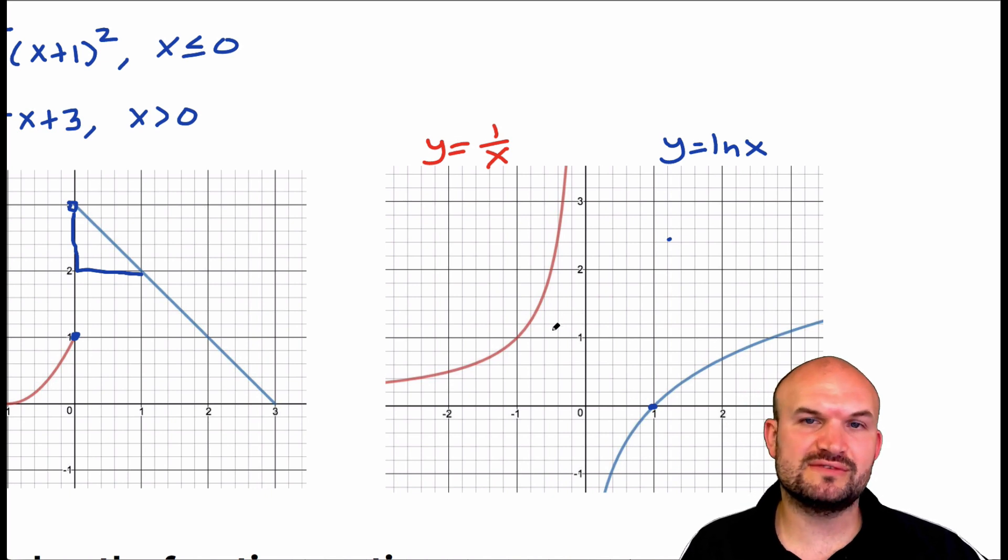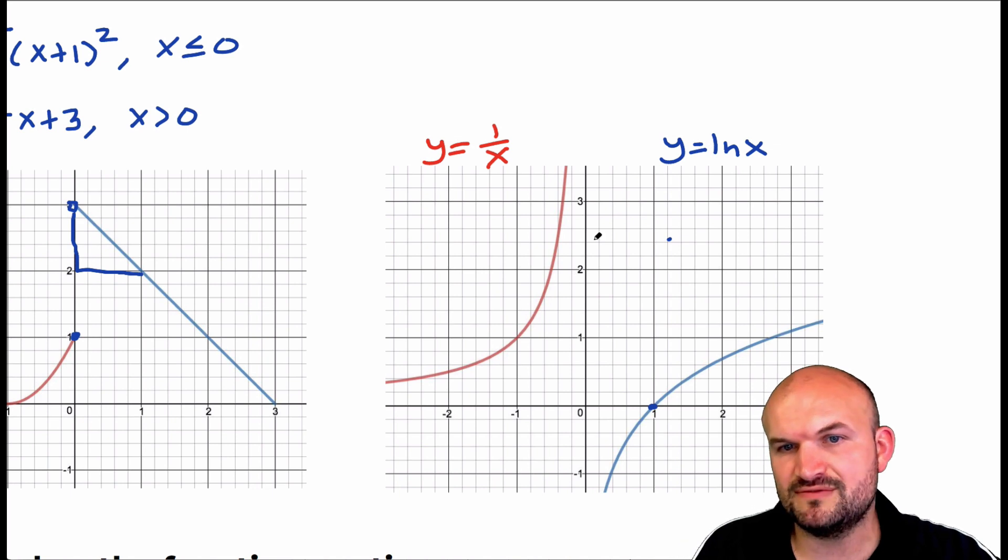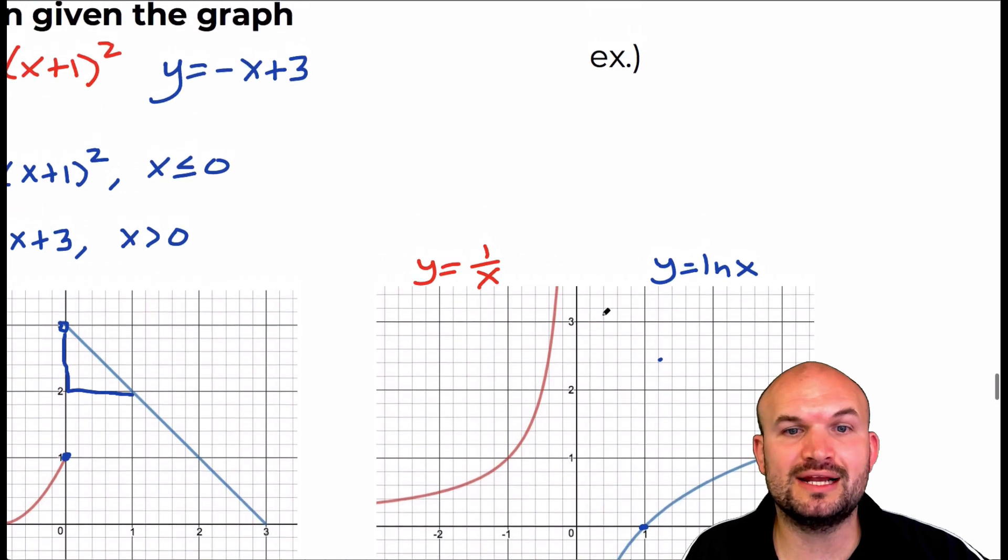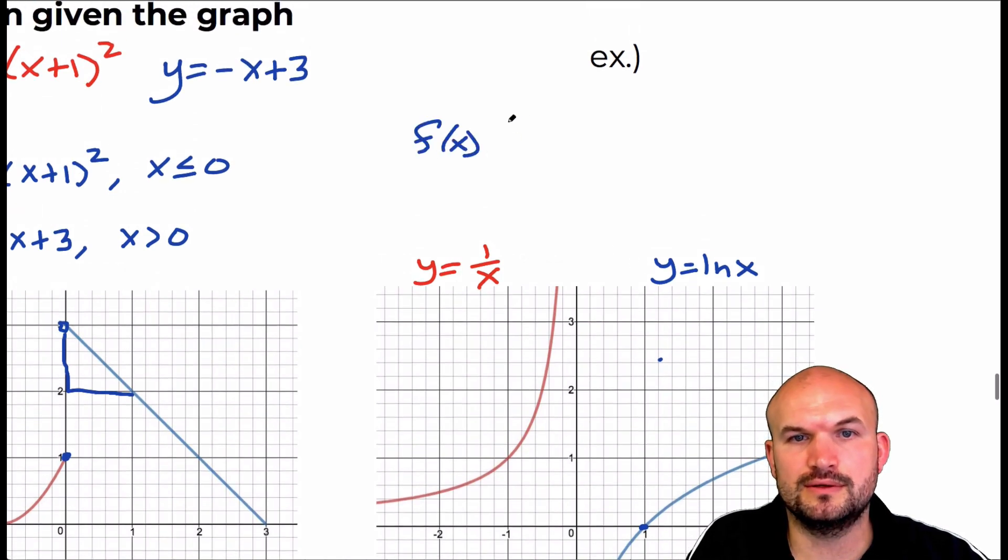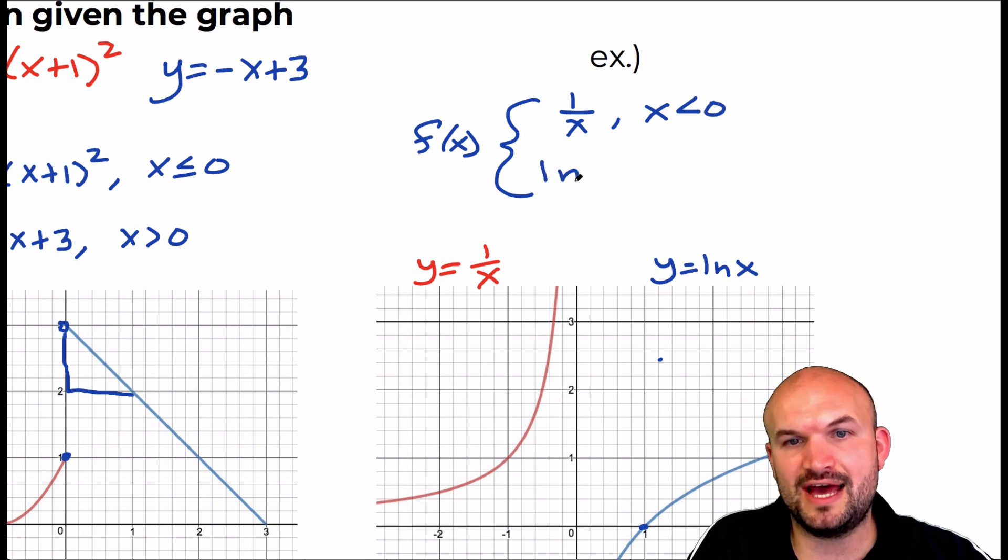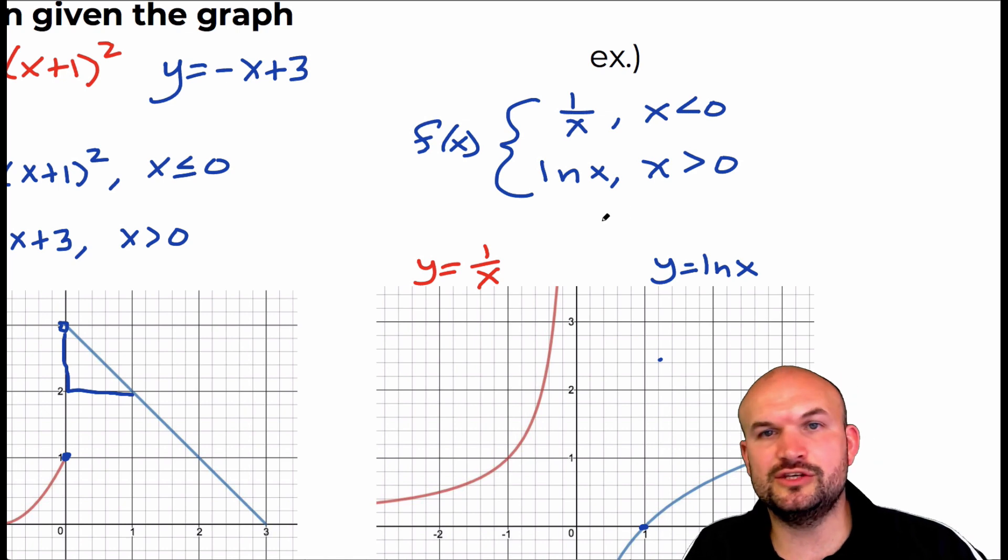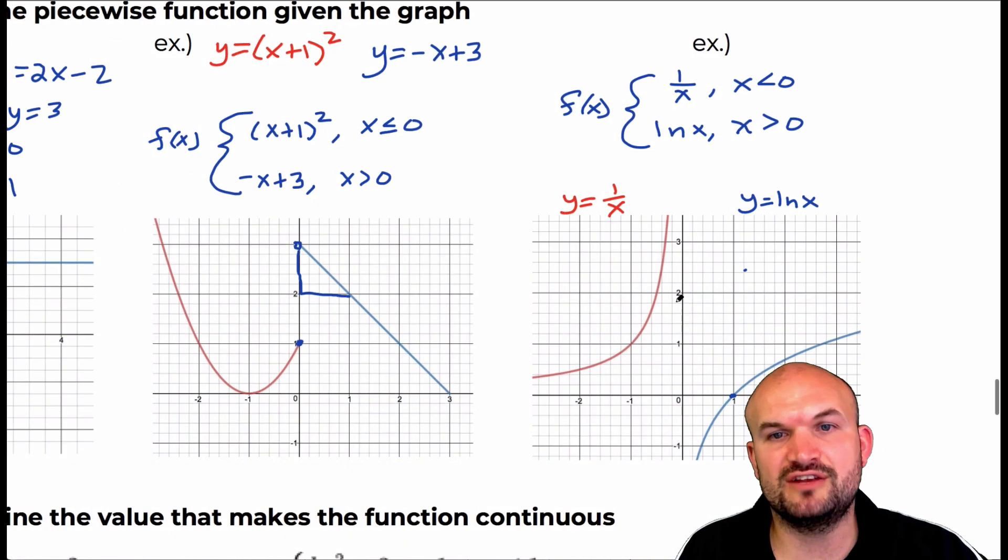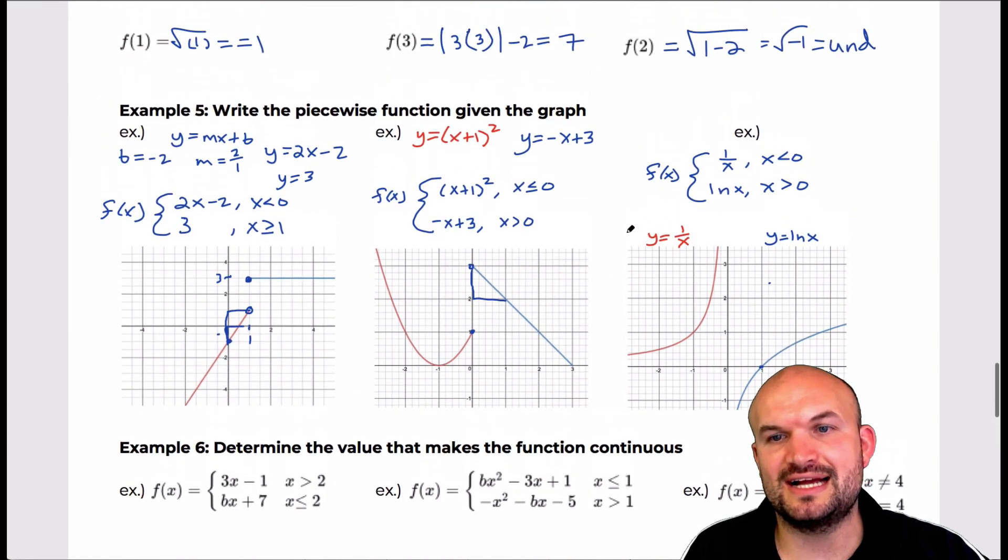And, notice for both of these functions, the reason why I decided to do these, both these functions have vertical asymptotes at x equals zero. So, they're not going to be defined for zero. So, when we're writing our piecewise function, we're going to have one over x. That's going to be for x values that are less than zero. And, then, we're going to have ln of x for x values that are greater than zero. So, we're not going to use the greater than or equal to or less than or equal to, because neither of these functions are defined when x is equal to zero.